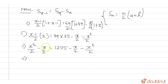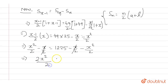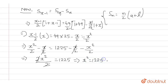Simplifying: the left side equals 1225 minus x/2 minus x²/2. The minus x/2 terms cancel on both sides, leaving 2x²/2 equals 1225, which simplifies to x² equals 1225.